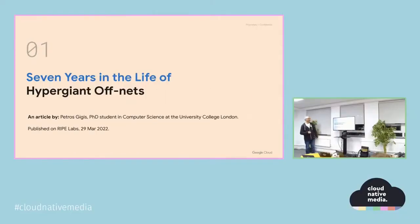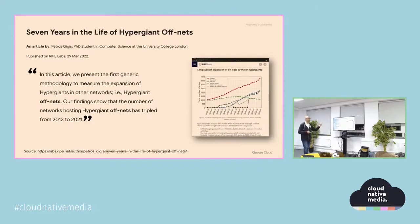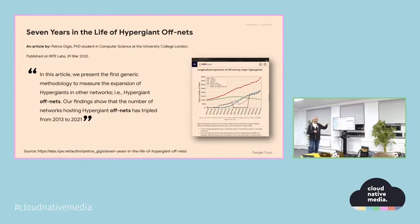The first paper is 'Seven Years in the Life of Hypergiant Offnets,' an article by Petros Gigis, a PhD student in computer science at University College London, published on RIPE Labs in March 2022. You can look up RIPE Labs to find the paper, comments, and references. The article presents a methodology to measure the expansion of hypergiant and other networks and their off-net deployments.